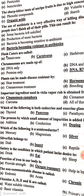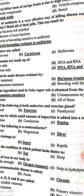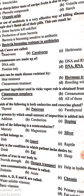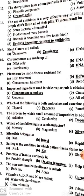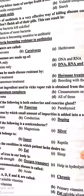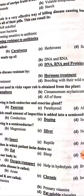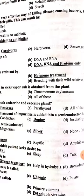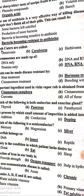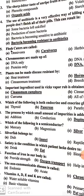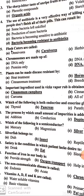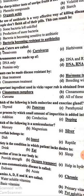Which of the following is both endocrine and exocrine gland? Pancreas. The process by which a small amount of impurities is added into a semiconductor is called doping.